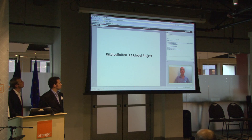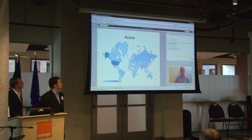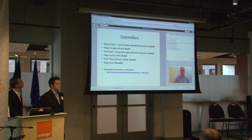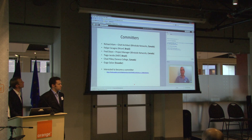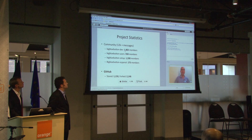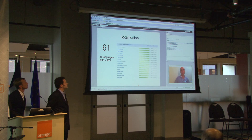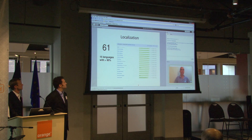Big Blue Button is a global project. In terms of activity, we have interest from all around the world — you can see this is a heat map showing a lot of activity from the United States, Russia, and India. There are committers from all around the world: Canada, Brazil, Ecuador, and abroad. It's a very active community. We have over 1,800 members in our developer mailing list, and for the geeks among you, we've been forked on GitHub over 2,100 times. It's localized into 61 languages, with the top 15 languages having over 90% coverage.